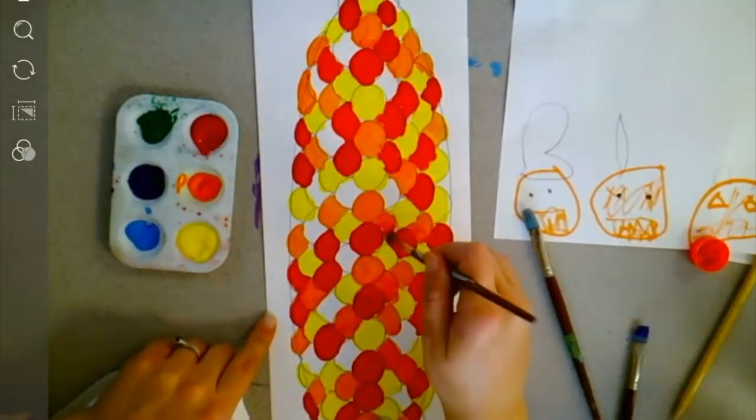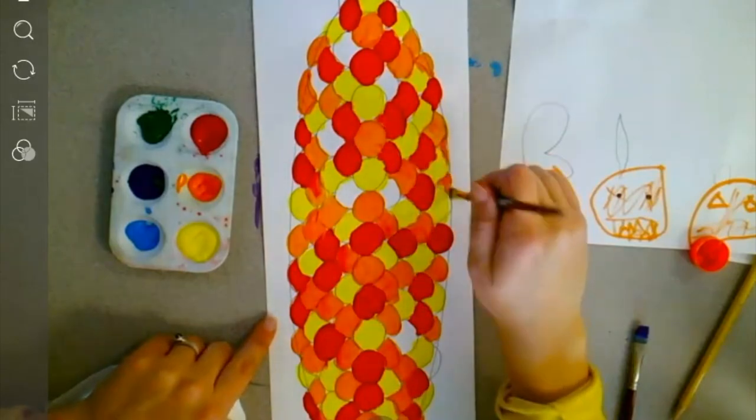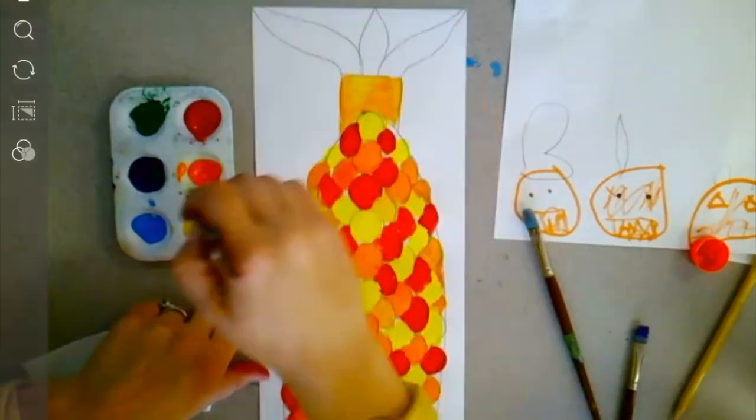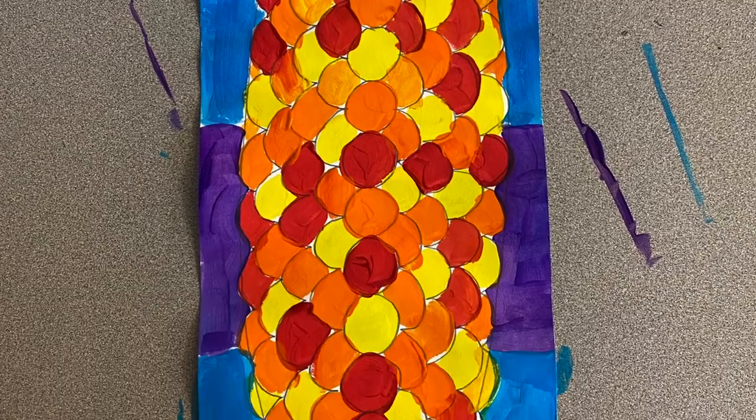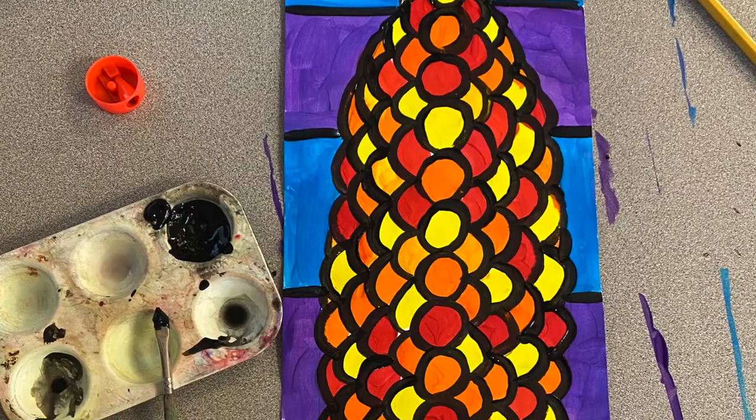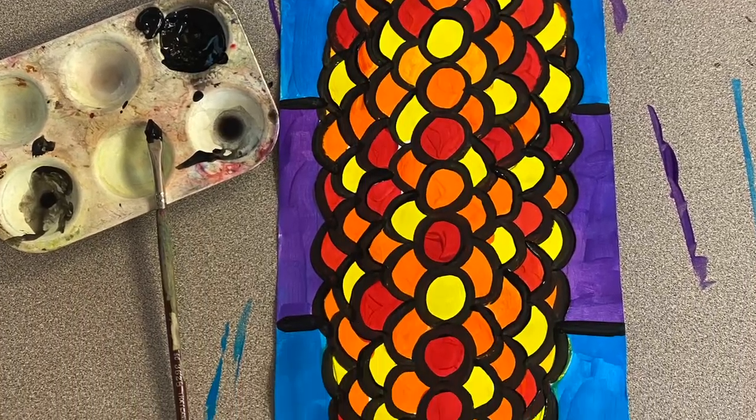It's really important that you are neat and try your best to stay inside your pencil lines. Let it dry, then you can add a pattern in the background with the cool colors. Let that dry, then outline with black paint.